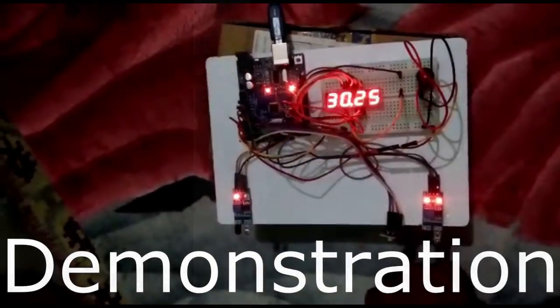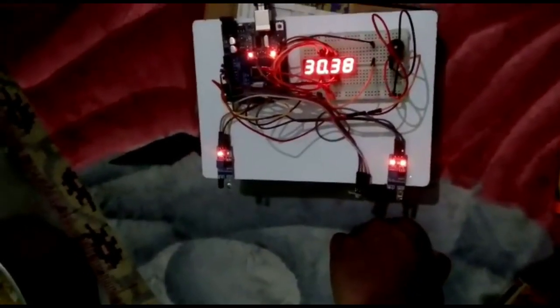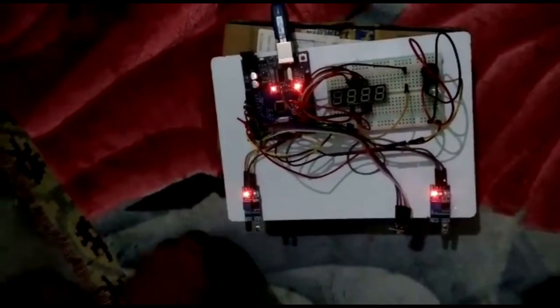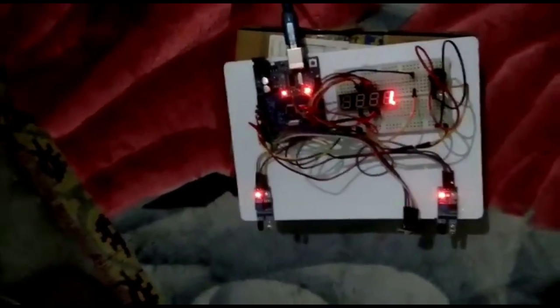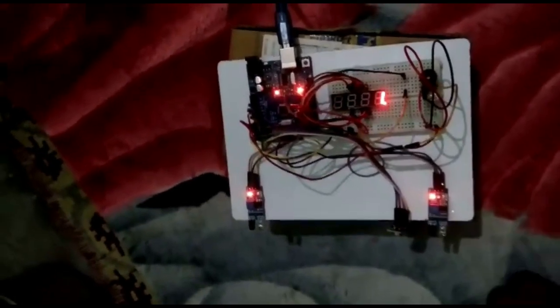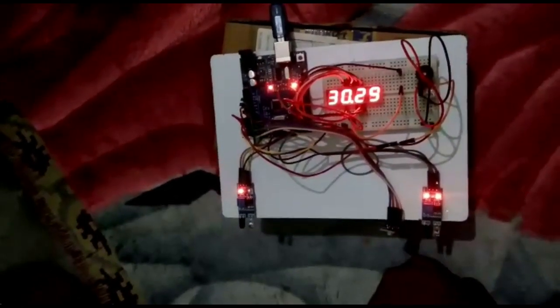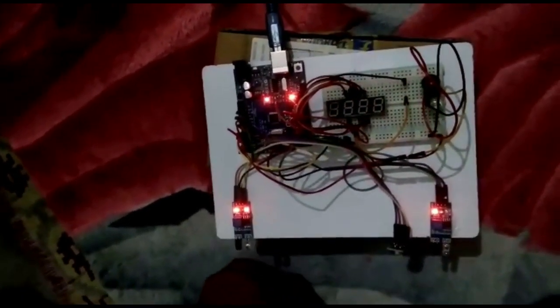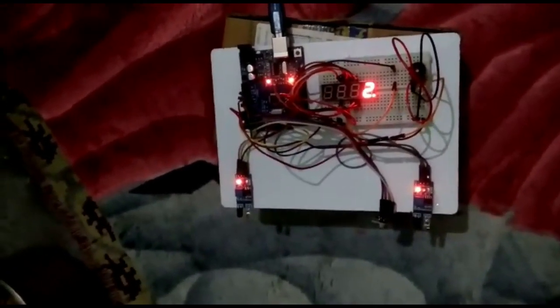Starting, as you can see the display showing zero, that is the number of people entered. When the first person reaches, it will encounter the temperature sensor and first IR. If the temperature is below the safe limit, then it will go further and encounter the second IR sensor.